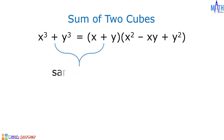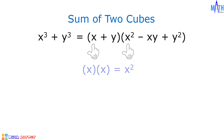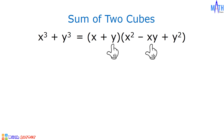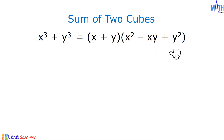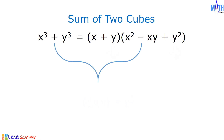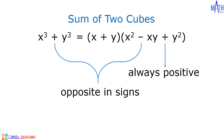And we have same signs here. For the trinomial factor, x squared comes from x times x. Negative xy comes from the opposite of the product of x and y — x times y is equal to xy, so the opposite of xy is negative xy. y squared comes from the square of y; y times y is equal to y squared. Notice that the signs here are opposite and this sign is always positive.